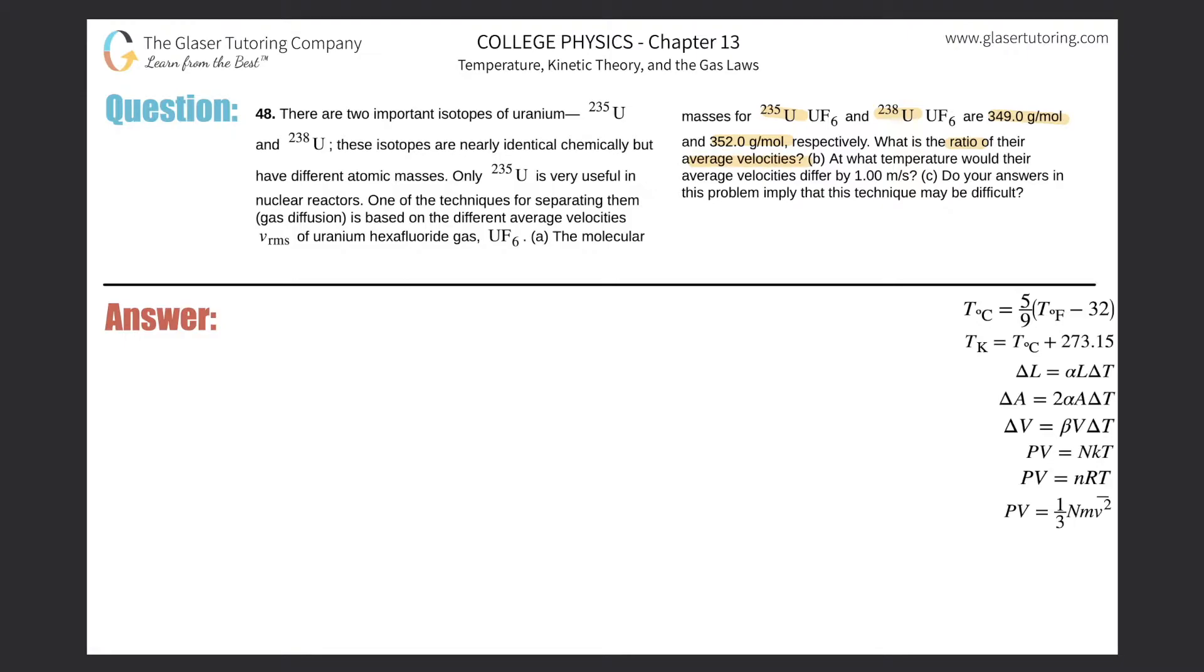Letter A, the molecular masses for U-235 and U-238 are 349 grams per mole and 352 grams per mole, respectively. What is the ratio of their average velocities? Okay, so first thing is we have to find a ratio for average velocities. Now ratios are relative. Whatever you put in the numerator relative to the denominator depends on whatever ratio they're asking for.